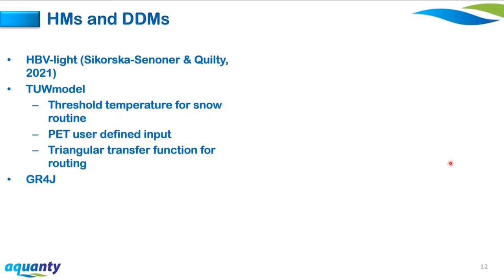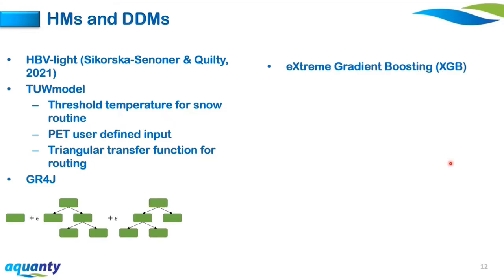The first data-driven model is Extreme Gradient Boosting (XGB). XGB is a tree-based machine learning approach where each tree is combined sequentially and scaled according to a learning rate to minimize the residuals made by prior trees. XGB provides a parsimonious model through various regularization methods compared to standard gradient boosting, assisting in the bias-variance trade-off.